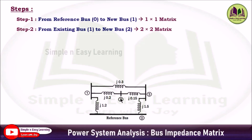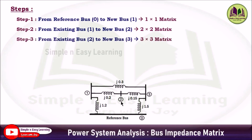Step 2: from bus 1 to bus 2. Bus 1 is now an existing bus — already considered in step 1. In step 2, bus 1 becomes the existing bus and bus 2 is a new bus. We are adding one more reactance j0.2, so the matrix is of order 2×2.